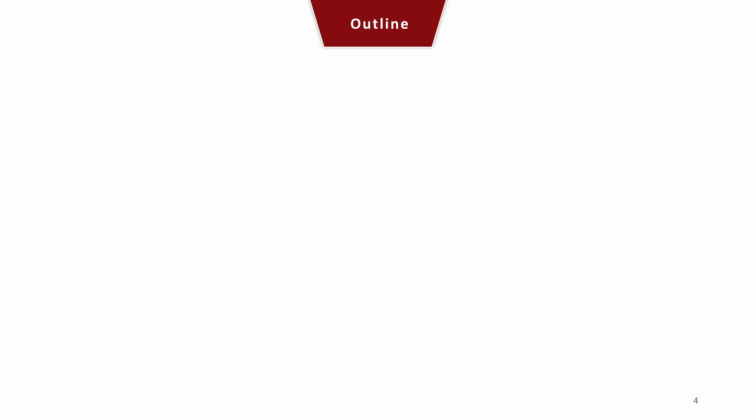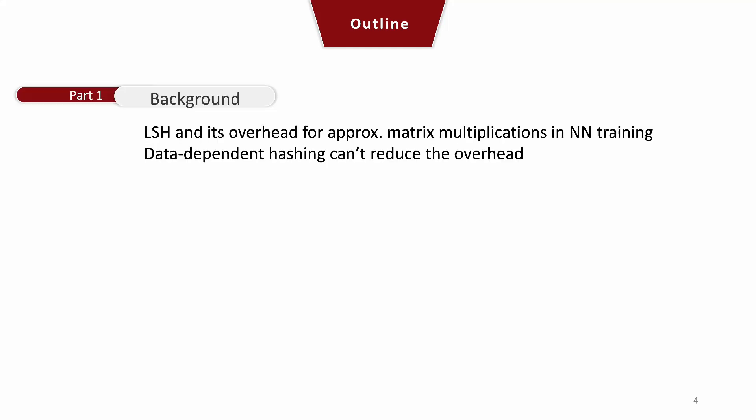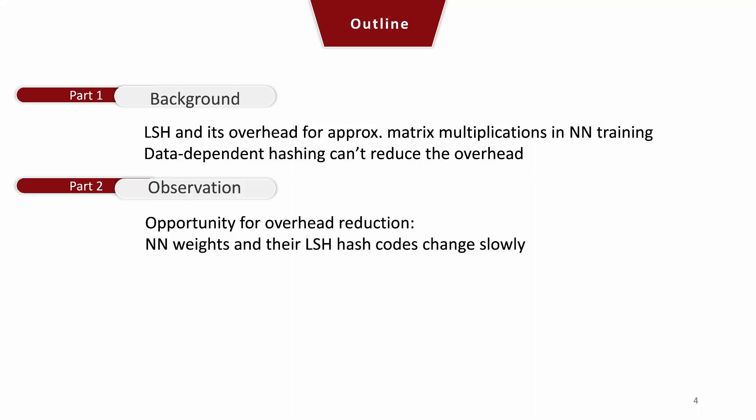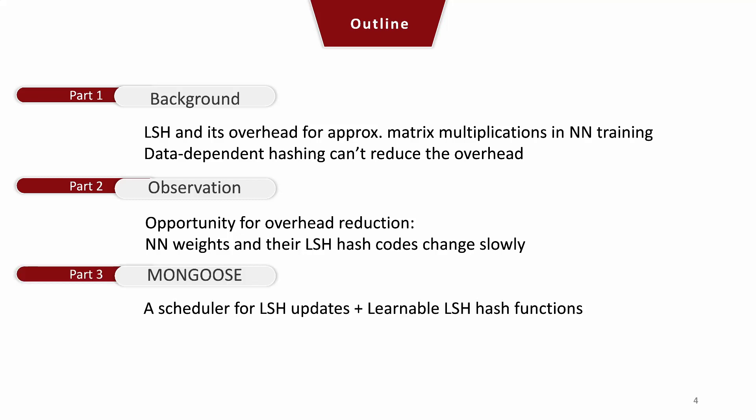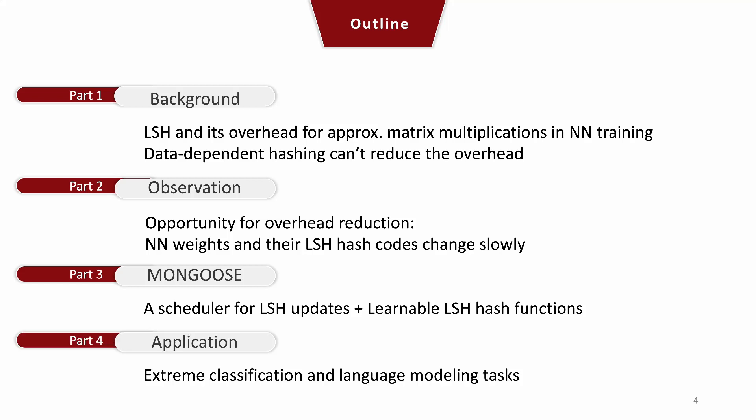Before going into the details of our proposal, let's walk through the outline. First, I'm going to talk about some background of LSH and data-dependent hashing, which will help better understand the problem setting and proposal. Then I will introduce the key observation that neural network weights and their hash codes change slowly. After that, I will show how we can take advantage of this observation and design our framework Mongoose. Finally, I will show how Mongoose achieves better accuracy-efficiency trade-offs in multiple real-world applications.